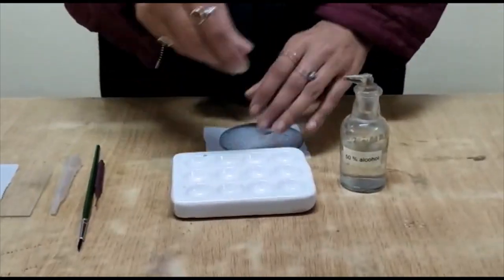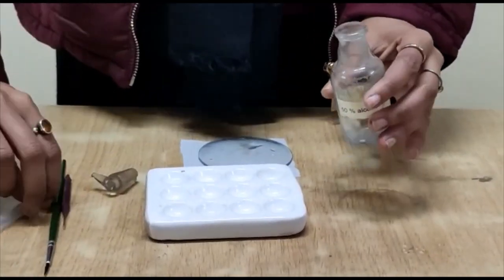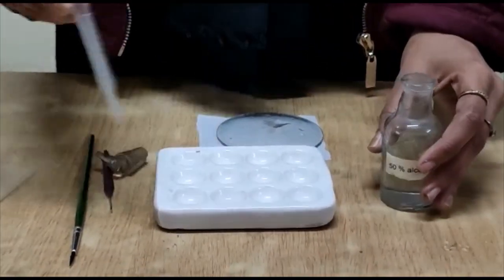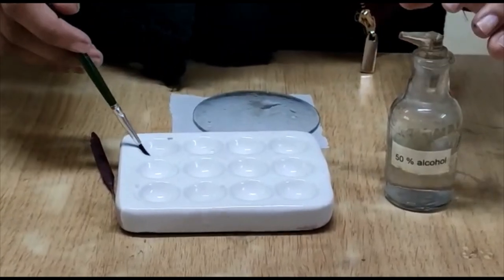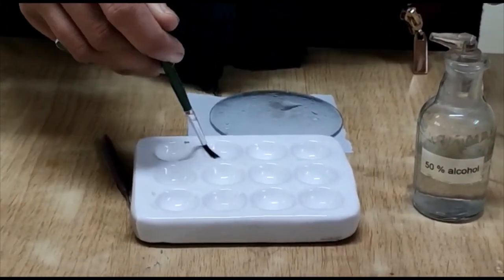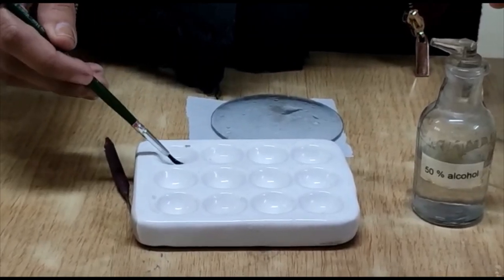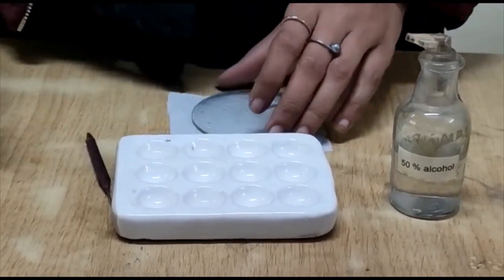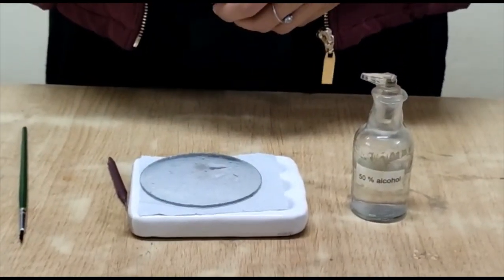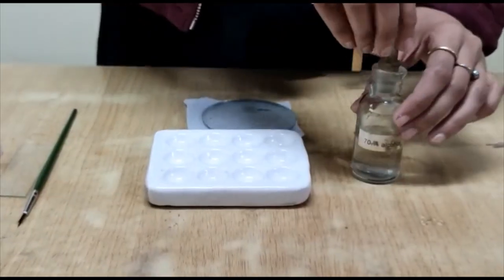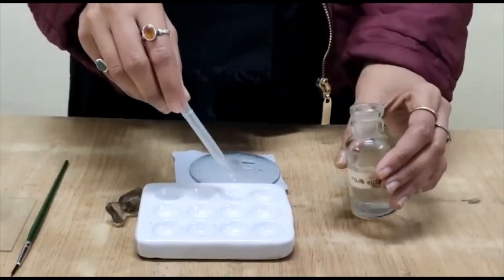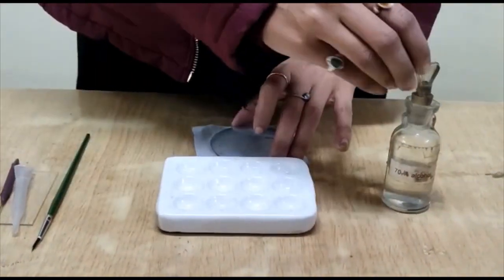After 5 minutes, now we take 50% of alcohol in next chamber of our staining tray and transfer the gemmules into the 50% of alcohol. Again cover it and wait for another 5 minutes. Next, take 70% of alcohol in the next chamber and transfer the gemmule sample into the 70% of alcohol.